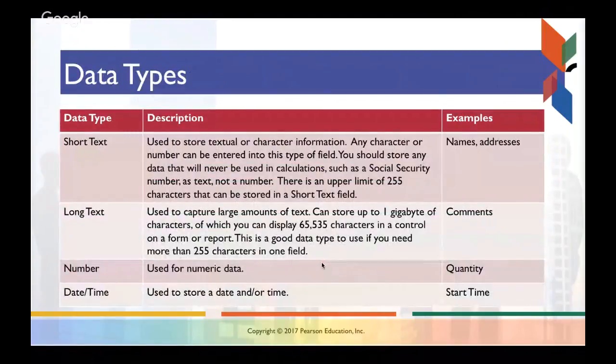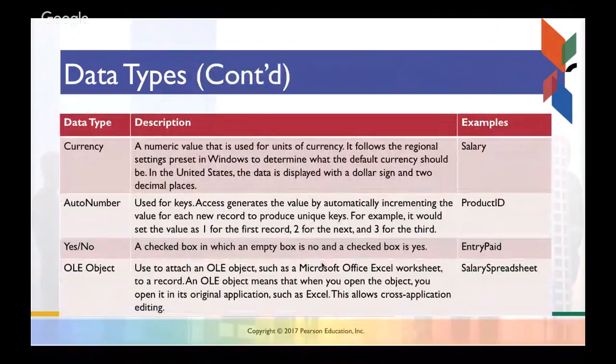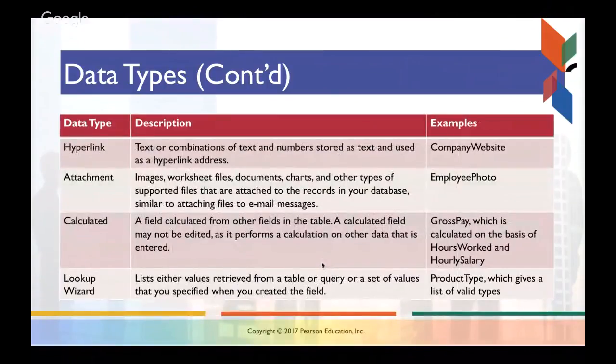Okay. So we talked about specific data types. So you have data types like short text, long text, numbers, date and times. And you want to be very specific about this because you want to be very explicit about the types of data your table will accept. So here are some more data types. Currency, auto number, of course. You can have a Boolean, yes, no, true, false checkbox. And then different objects that we don't mess with too much. You can have hyperlinks, attachment objects, calculated fields and lookup wizards. These are all the different types of data types that you can have.